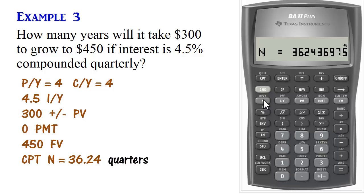But we want to find this in years. So to do so, we just divide the N value by P/Y. P/Y was set to 4. So we just divide this result by 4. Divided by 4. And that's it. 9.06 years. So it takes 9.06 years for $300 to grow to $450 at 4.5% compounded quarterly.